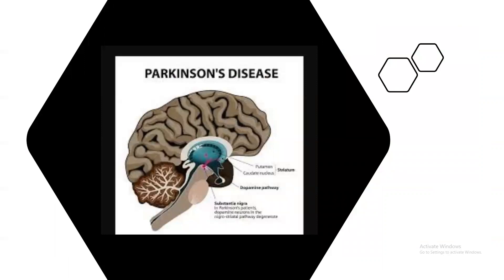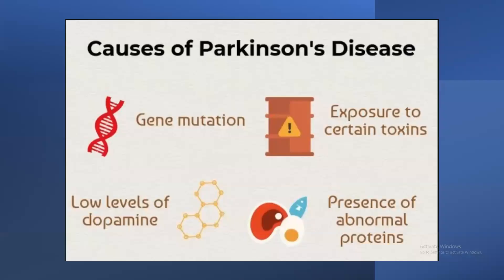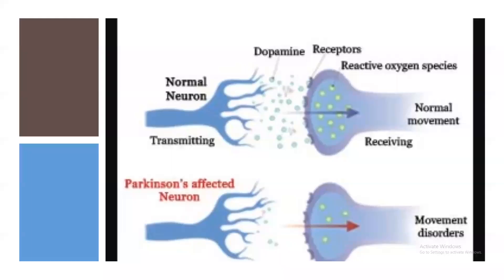Next is Parkinson's disease. It is an idiopathic, slowly progressive neurodegenerative disorder whereby two or more of the following need to be present: bradykinesia, rigidity, resting tremor, and loss of postural mechanism. Causes include gene mutations, exposure to certain toxins, low levels of the dopamine neurotransmitter in the brain, and the presence of abnormal proteins in the body.